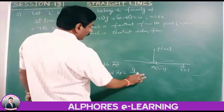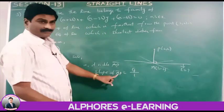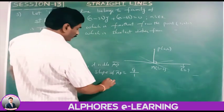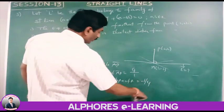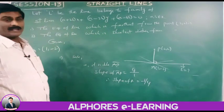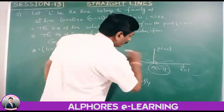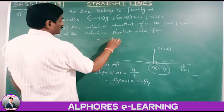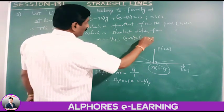The slope of AP is 4. The required line is perpendicular to AP, so its slope is minus 1/4. This line passes through the point of concurrency A(1, minus 2). Using the formula Ax plus By equals Ax1 plus By1 with slope minus 1/4.